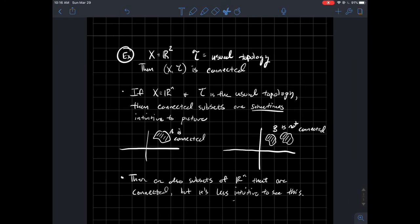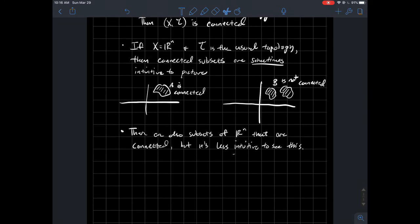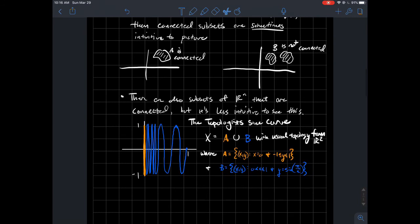Now, on the other hand, there's also subsets of R^n that are connected, but it's way less intuitive to see this. So to give you an example of that, that not everything's as nice as these two pictures above, let's look at this thing. This is a really famous example. It's called the topologist sine curve.